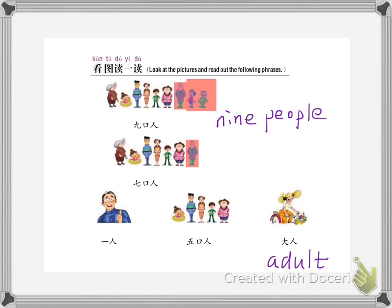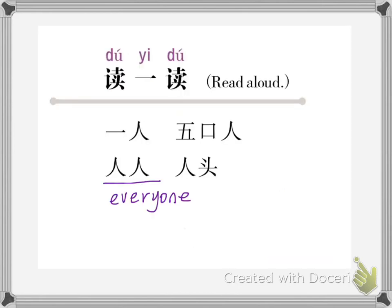Let's read! Nine people, seven people, one person, five people, adults. Let's read again! Read out loud: one person, five people, everyone, person, head.